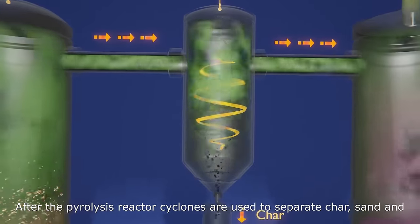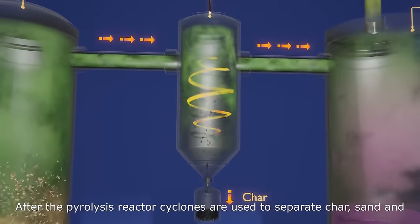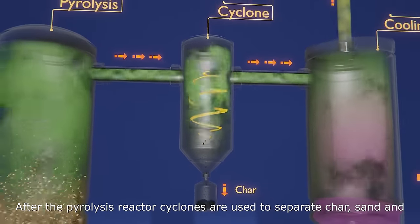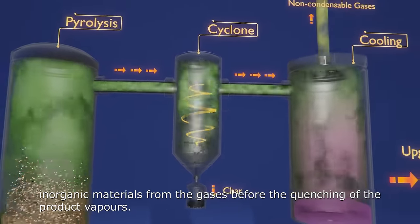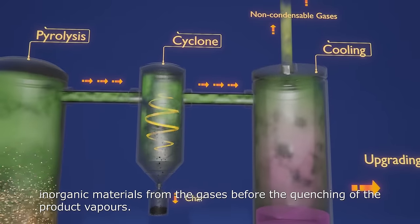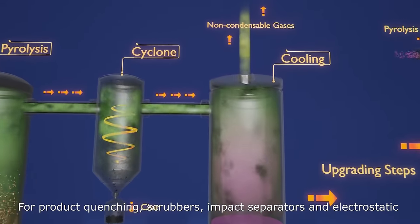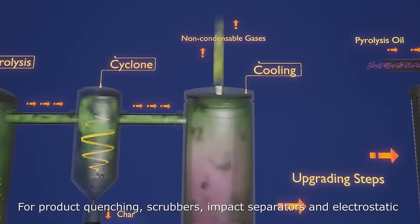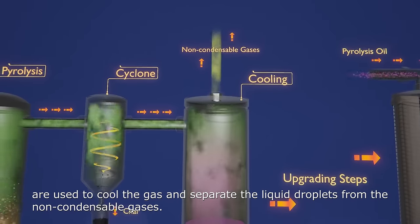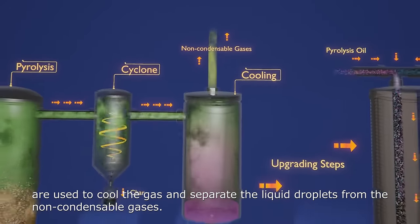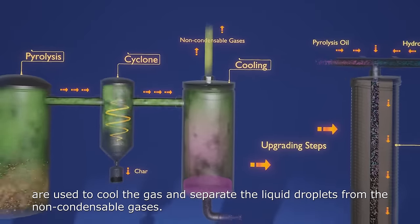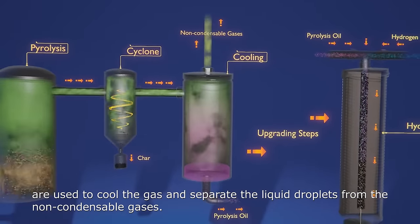After the pyrolysis reactor, cyclones are used to separate char, sand, and inorganic materials from the gases before the quenching of the product vapors. For product quenching, scrubbers, impact separators, and electrostatic precipitators are used to cool the gas and separate the liquid droplets from the non-condensable gases.